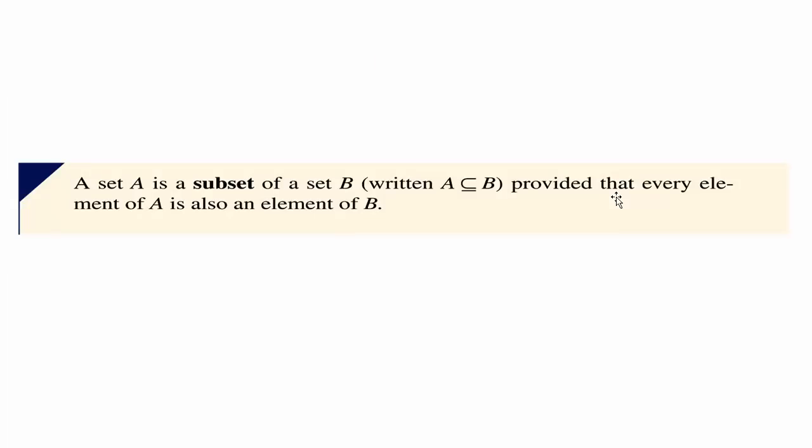A subset is just a set of elements that are all within another set and we use this funky little symbol. It kind of looks like the less than or equal to symbol. And it kind of makes sense because a subset is a set of elements that are going to be less than or equal to the other set. So we curve it off because we are now talking about sets. So A is a subset of B provided that everything that is in A, all elements of A are also in B.